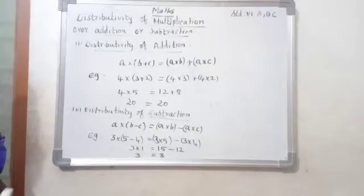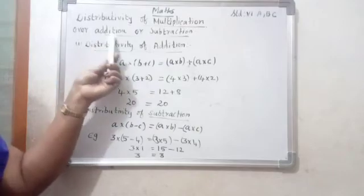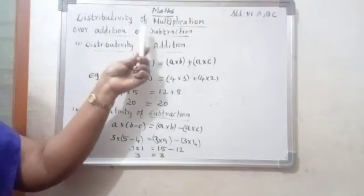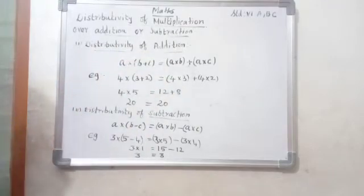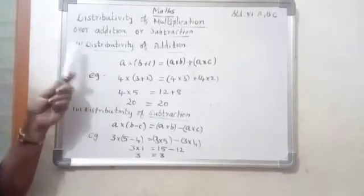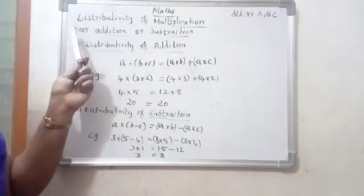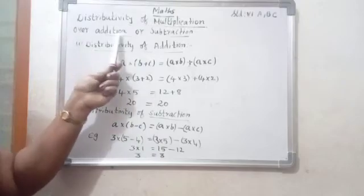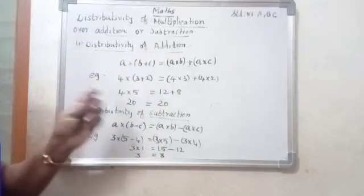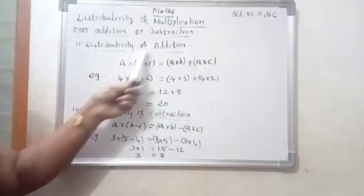Good morning students. Now this class, we will study the distributive property of multiplication over addition or subtraction. Last class we covered the commutative property and associative property. So now this class: distributive property of multiplication over addition or subtraction. First one: distributive of addition.